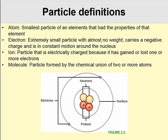Electrons are very important to our discussion of chemical bonding. These are extremely small particles with almost no weight. They carry a negative charge, and they're in constant motion around the nucleus. These are also responsible for a lot of the chemical bonding we're going to be talking about. If a particle has an electrical charge because it has either gained or lost one or more electrons, we call that particle an ion. A molecule is a particle formed by the chemical union of two or more atoms.